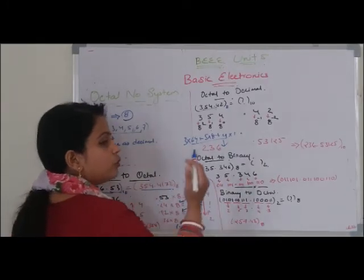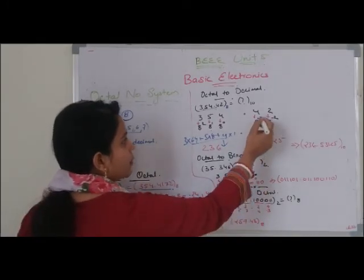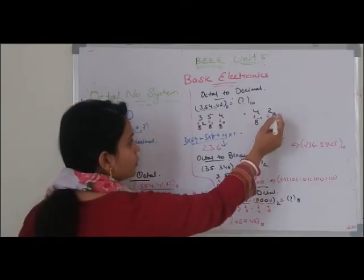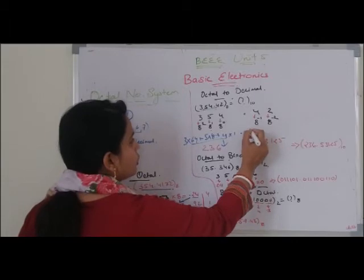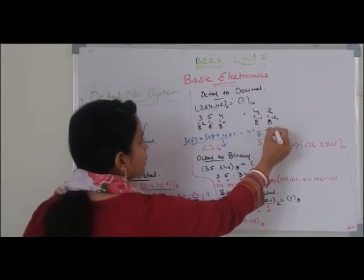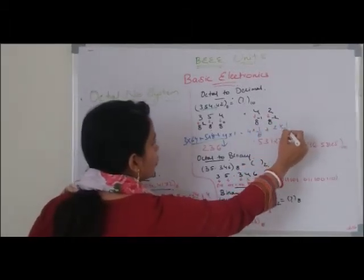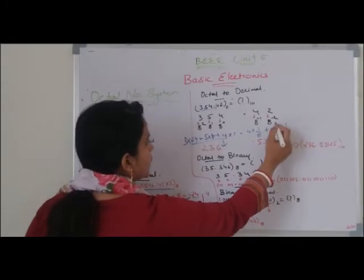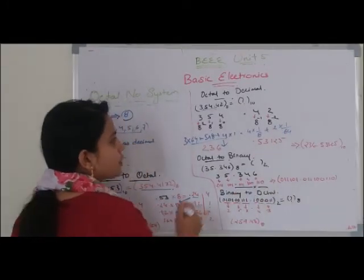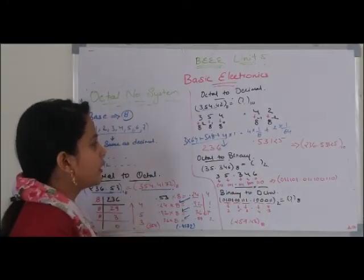Fraction part में हम left to right की तरफ जाते हैं: 8 to the power minus 1 and 8 to the power minus 2. So 4 into 1/8 plus 2 into 1/64, and after solving this the answer is 0.53125.